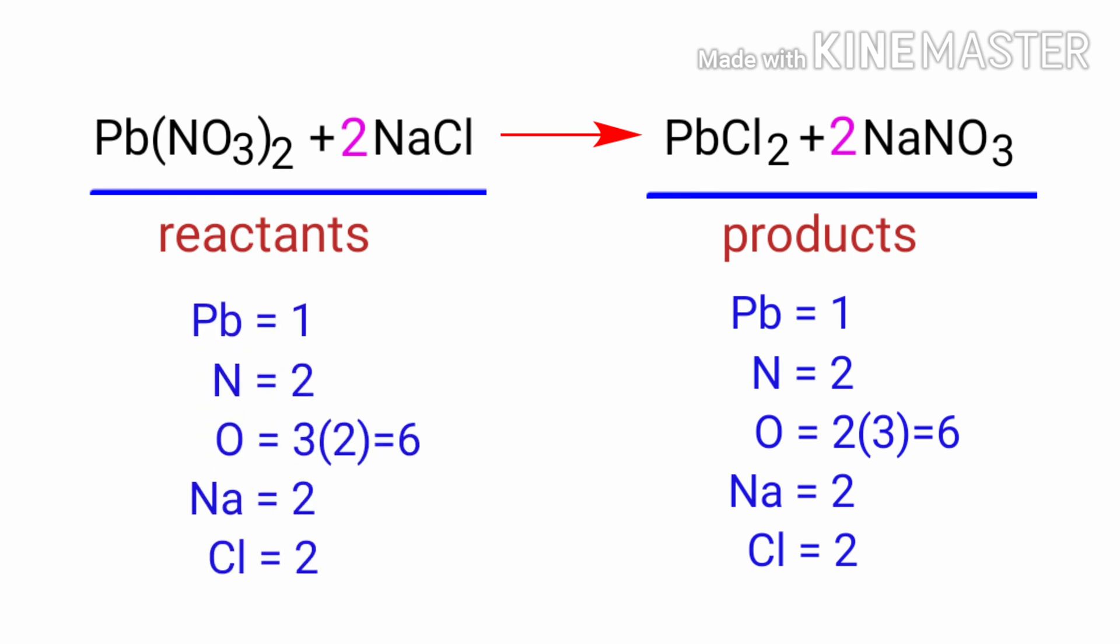The equation is now balanced. There are 1 lead atom, 2 nitrogen atoms, 6 oxygen atoms, 2 sodium atoms, and 2 chlorine atoms on both sides.